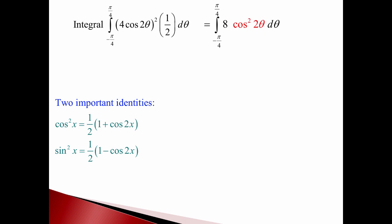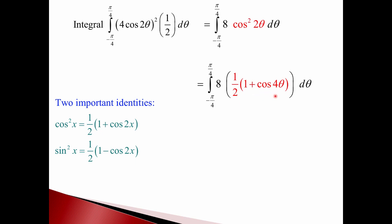These identities are written as cosine squared of x, but in our problem we have cosine squared of 2θ. So 2θ takes the place of x in the identity. The identity really says: cosine squared of some stuff equals ½(1 + cosine of twice that stuff). In our example, our stuff is 2θ. So we get ½(1 + cos(4θ)). The whole thing becomes an integral with an 8, and the cosine squared becomes ½(1 + cos4θ).